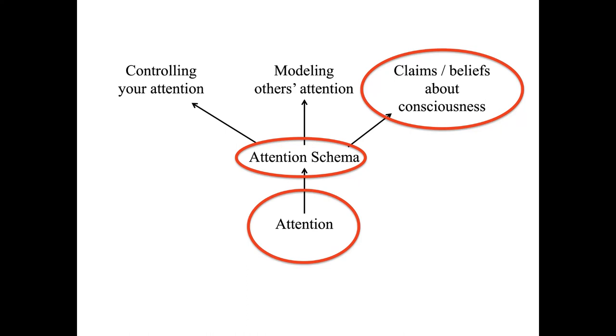Experimentally, this means that consciousness and attention should almost always co-vary. What you attend to, you should normally be conscious of. What you don't attend to, you should normally not be conscious of. And this is experimentally true almost all the time. Some theorists even propose that consciousness is attention, because the two co-vary so tightly.